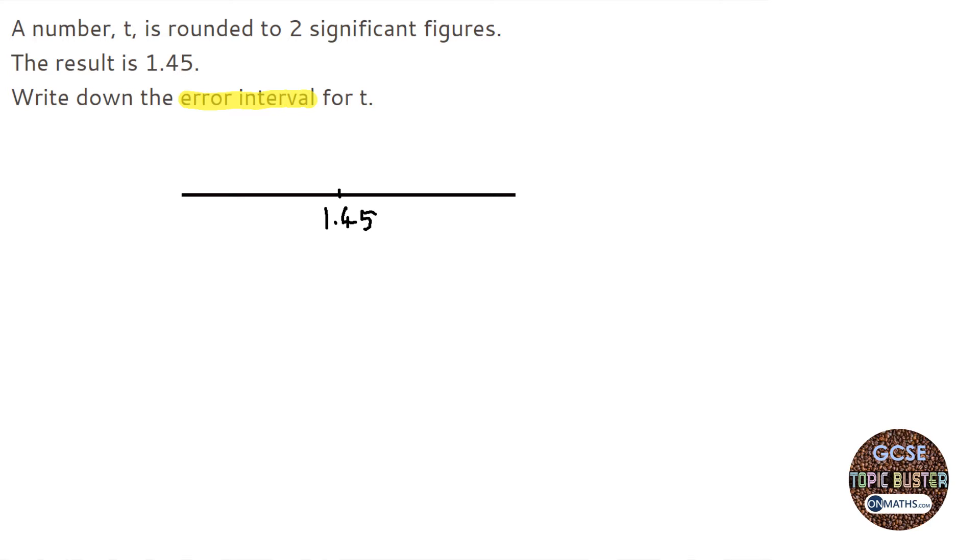Now we've got to figure out what the lowest and largest it could have been before it was rounded. To do that I need to figure out what's next on the number line going downwards, given the fact they were rounded to two significant figures.